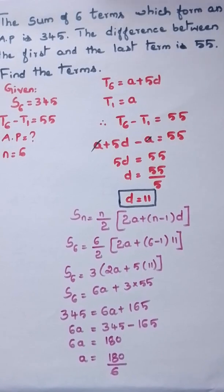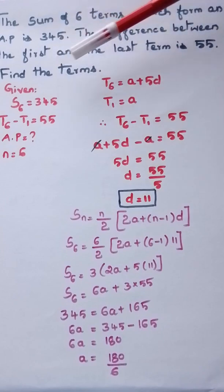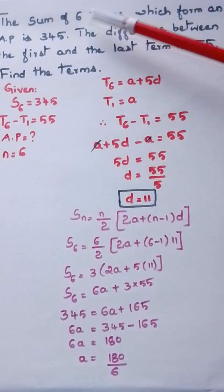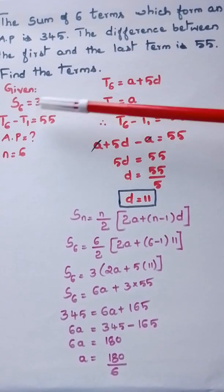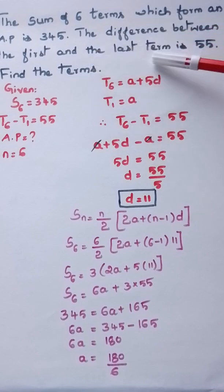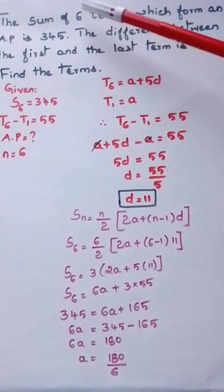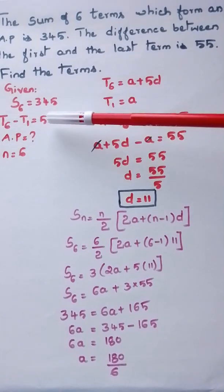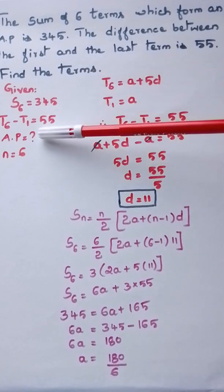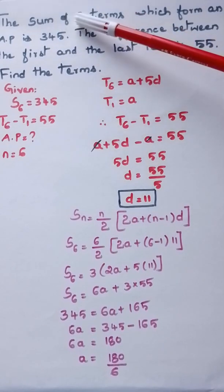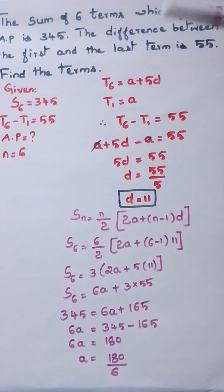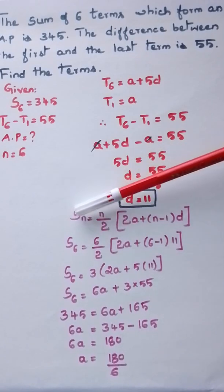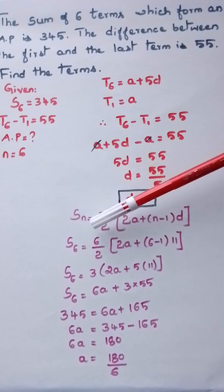Now let's move to another sum from arithmetic progression. The sum of six terms which form an AP is 345, and the difference between the first and the last term is 55. Find the terms. So S6 = 345, T6 − T1 = 55, and n = 6. We need to find the AP series.